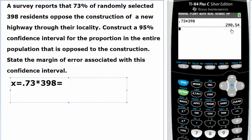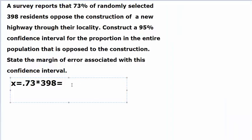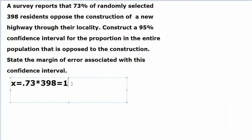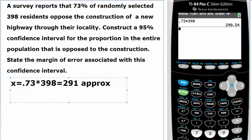That turns out to be 290.54. We will round it to 291, to the nearest whole number.